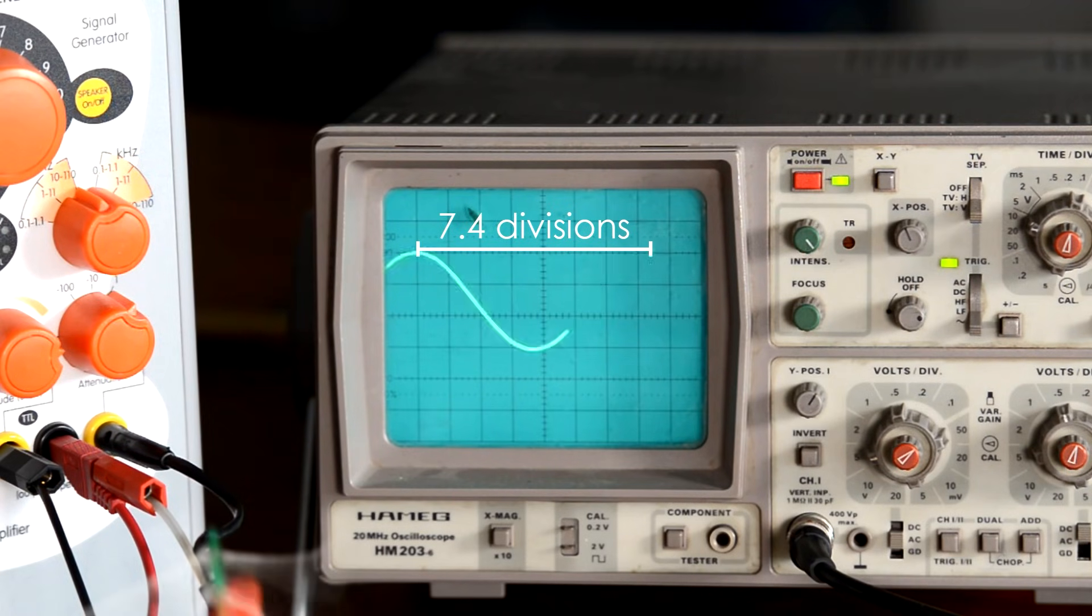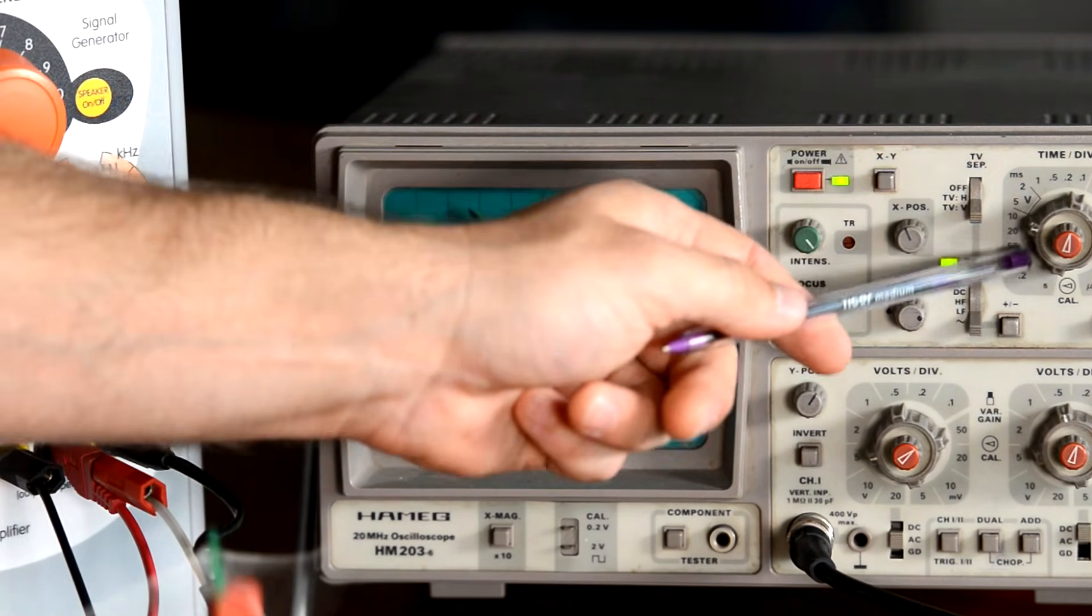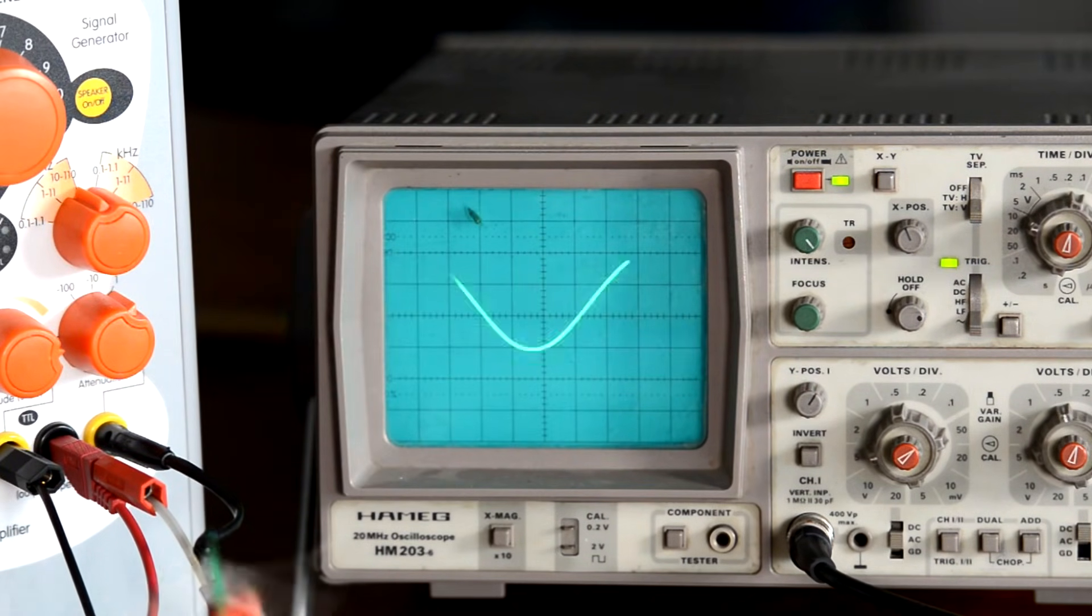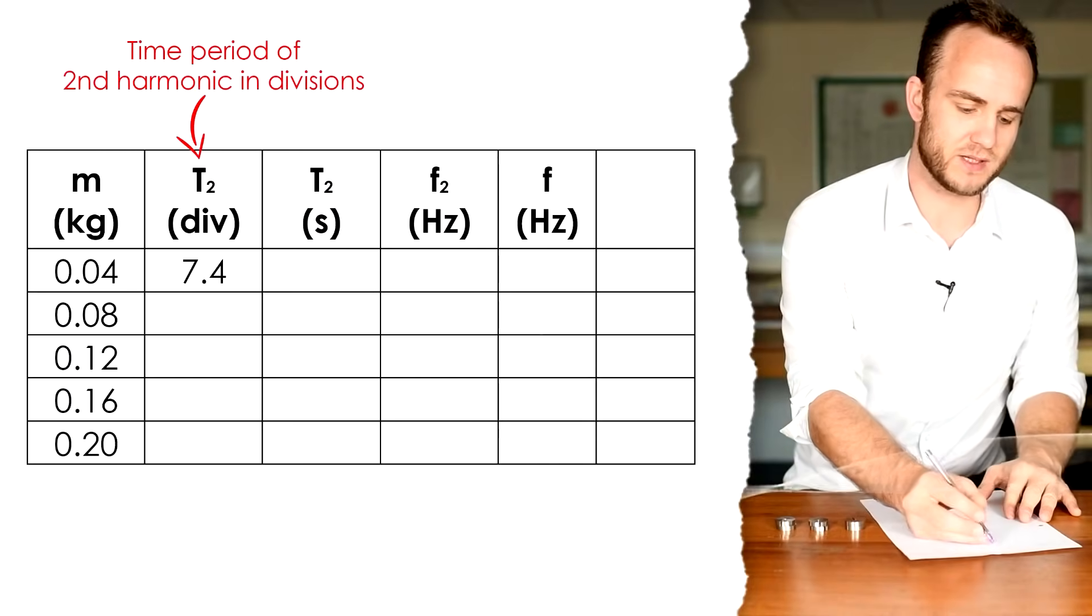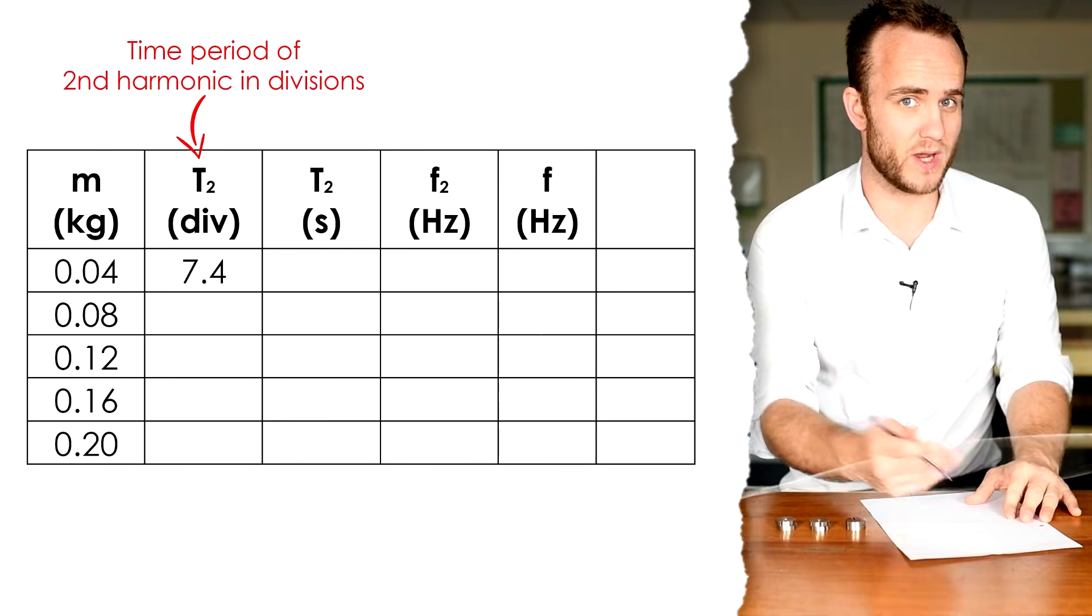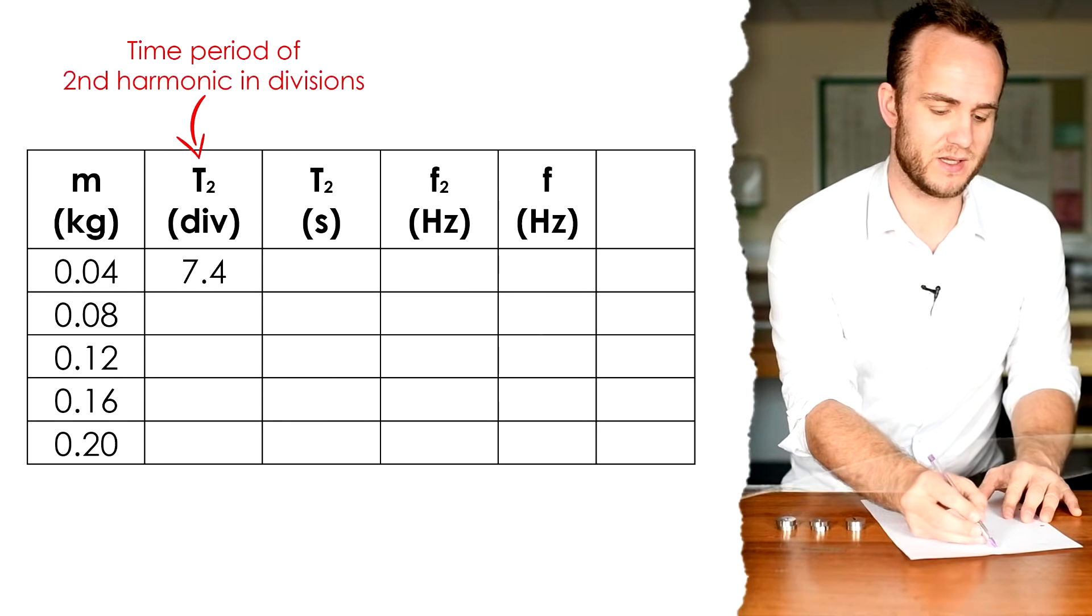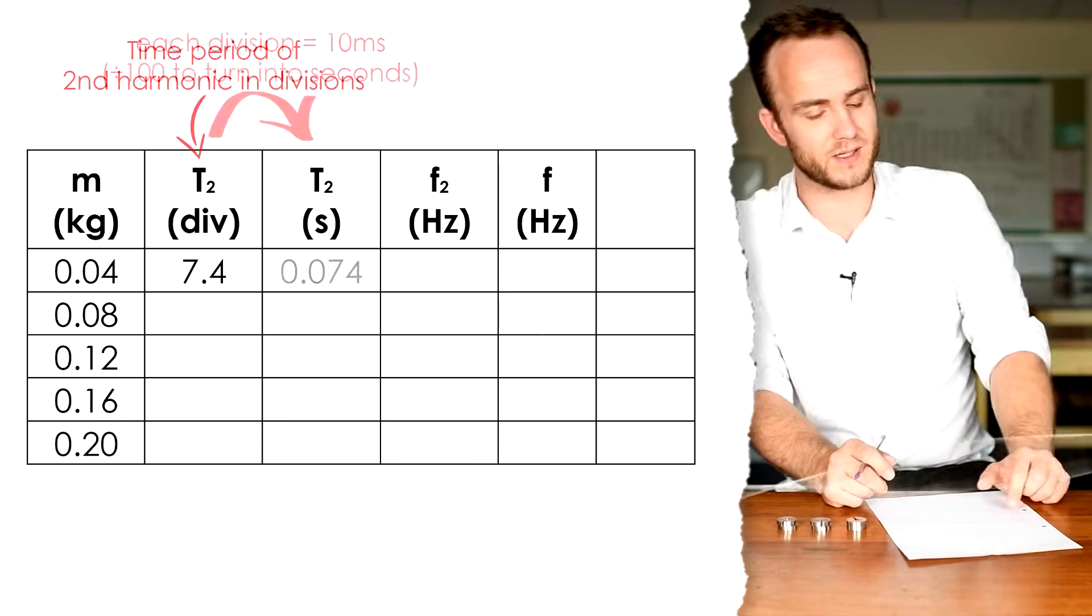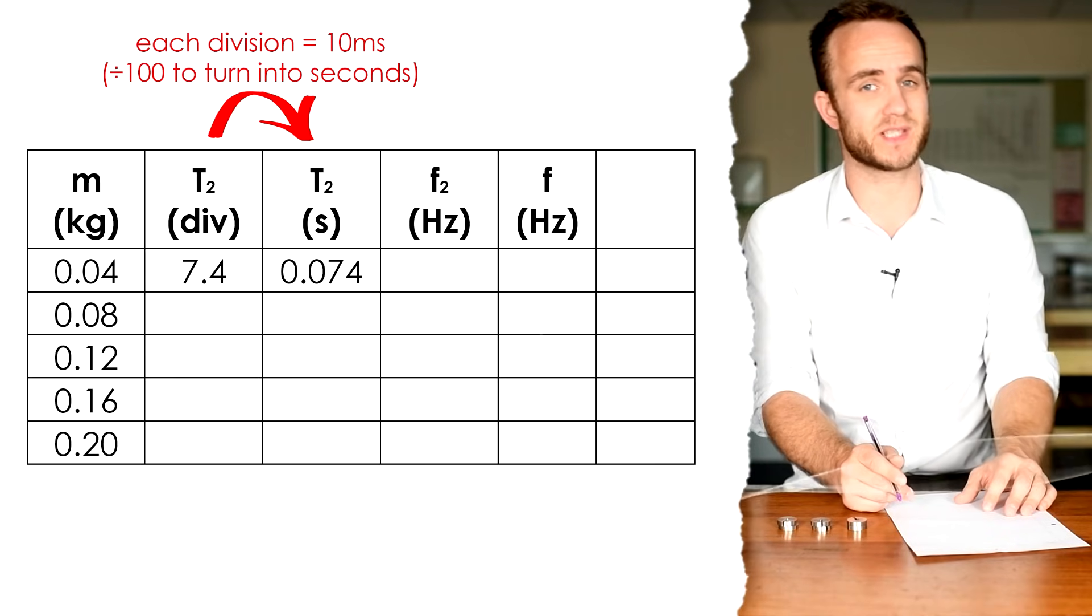To turn that into an actual time, we need to look at the time base. Over here, we can see that each division, that's each centimeter, each big square is 10 milliseconds. So, that means that 7.4 squares times 10 milliseconds, that means that our time period is 74 milliseconds, or 0.074 seconds.